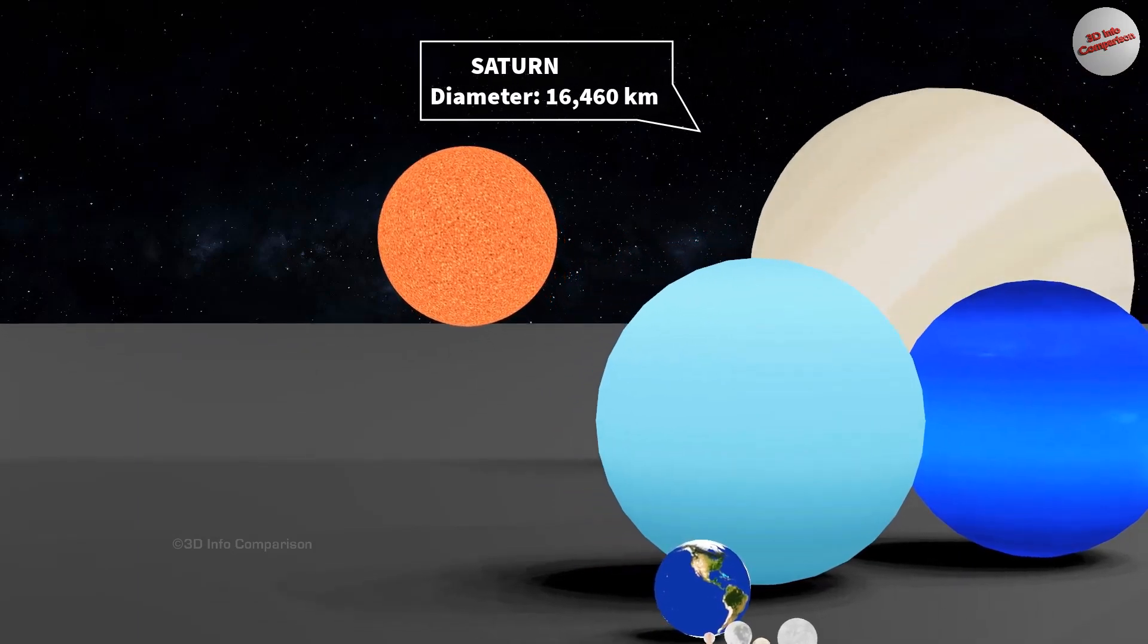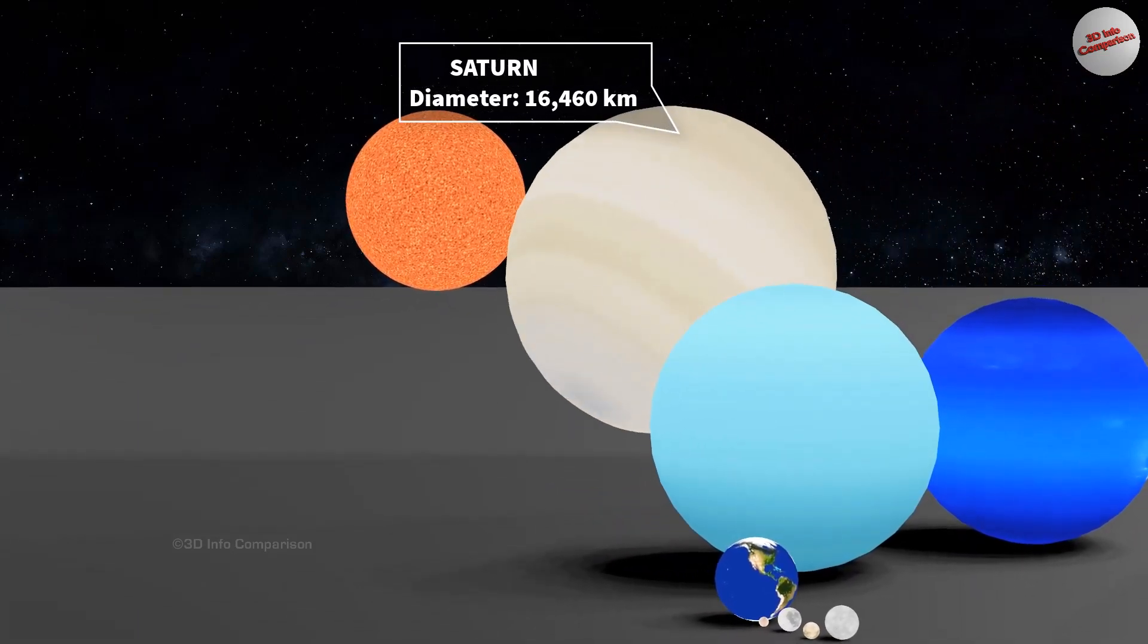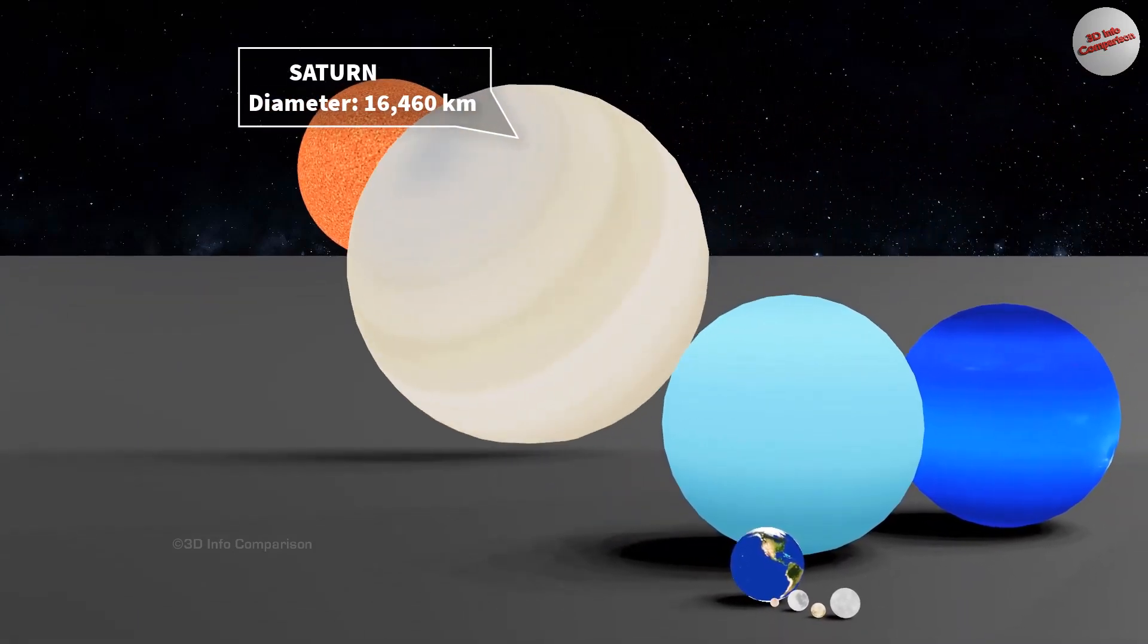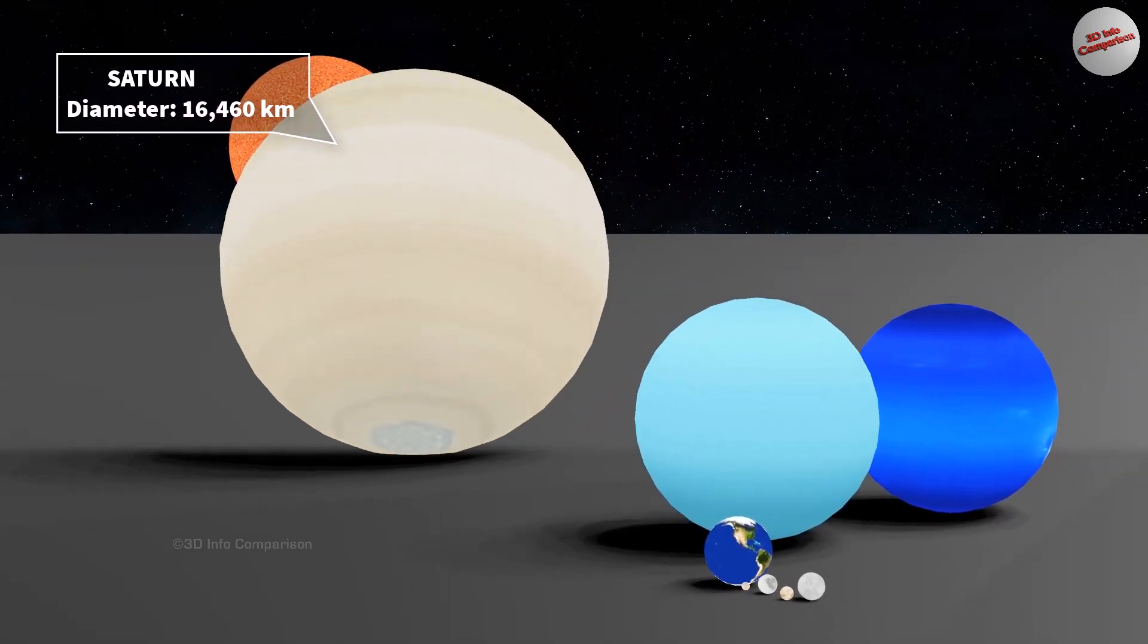Saturn is the sixth planet from the Sun in our solar system. It has an equatorial diameter of approximately 120,536 kilometers.